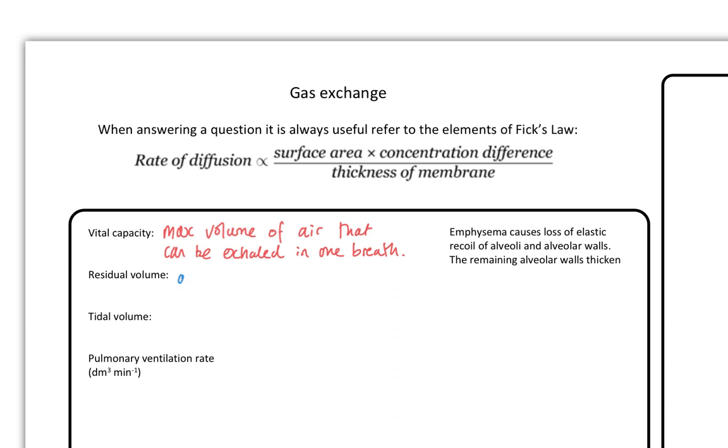And the reason why it's not the volume of the lungs is because of the residual volume. And this is a crucial stat. This is the air that can't be expelled. It can't be expelled. It's the air in bronchioles and trachea and bronchi.